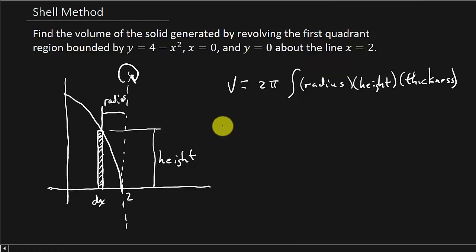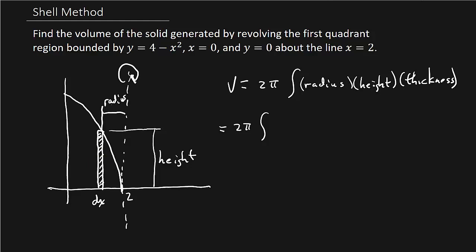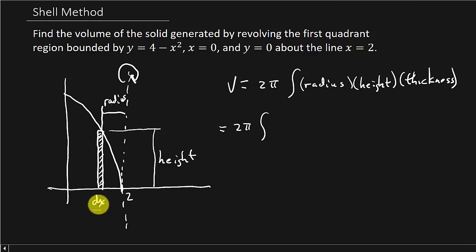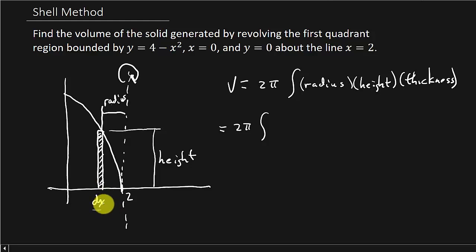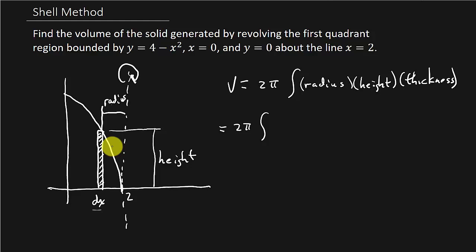It's so important to draw this rectangle in right here, because we get the thickness of this rectangle and we can see that thickness is dx. So what does that tell us? That tells us that everything needs to be in terms of x, because I'm going to be integrating with respect to x. If the thickness were dy, then that tells me everything needs to be in terms of y.